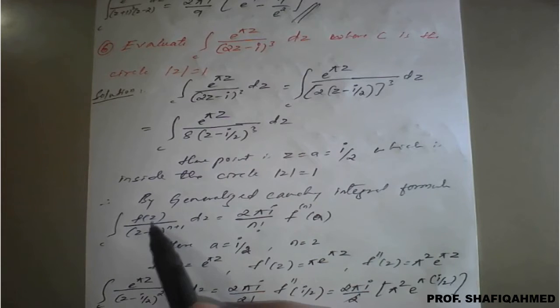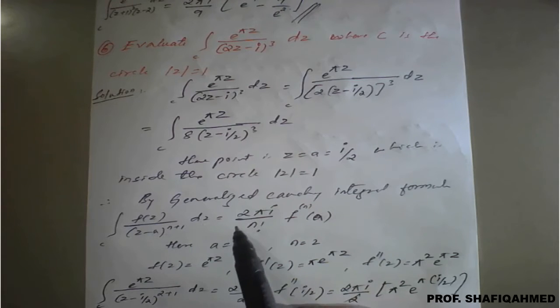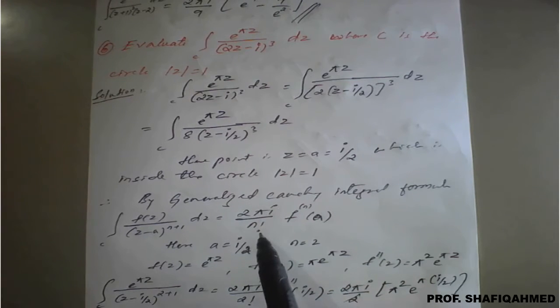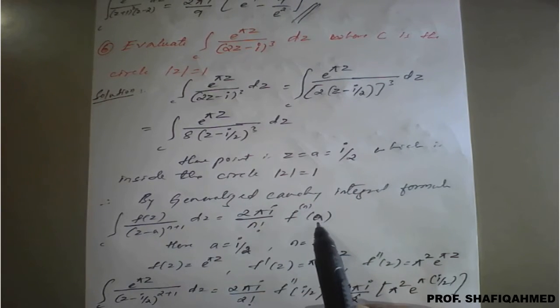The formula is: integration of f of z divided by z minus a raised to n plus 1 dz equals 2 pi i upon n factorial times f raised to n of a.